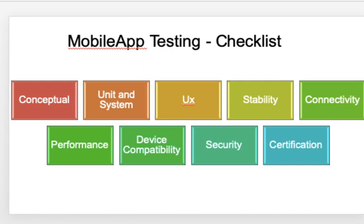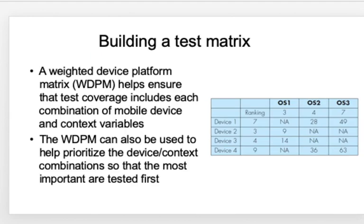A mobile app testing checklist covers: Conceptual, Unit and System testing; UX; Stability; Connectivity; Performance; Device Compatibility; Security; and Certification. A test matrix called the Weighted Device Platform Matrix (WDPM) is built, with devices on the rows and operating systems on the columns. Rankings from zero to ten indicate relative importance — a ranking of three has higher priority than seven or nine. The product of each pair of rankings is computed and entered as a cell entry in the matrix, helping prioritize device-context combinations so the most important ones are tested first.